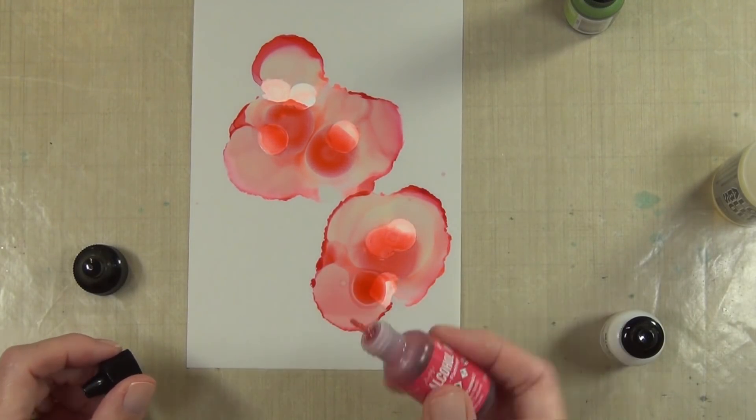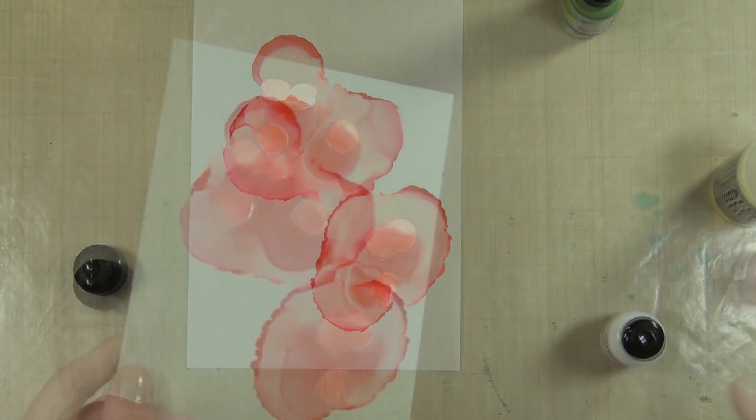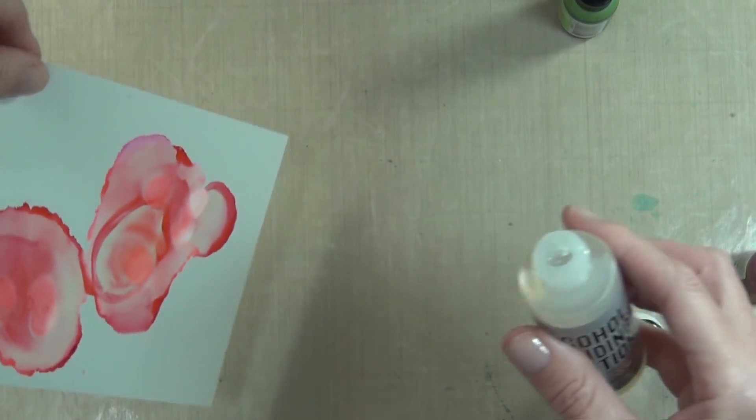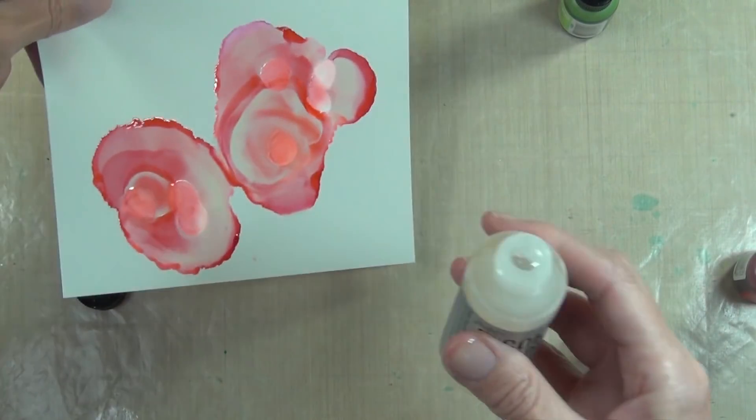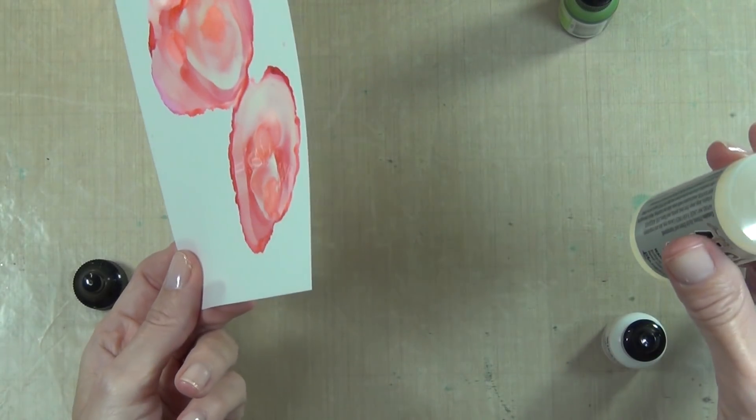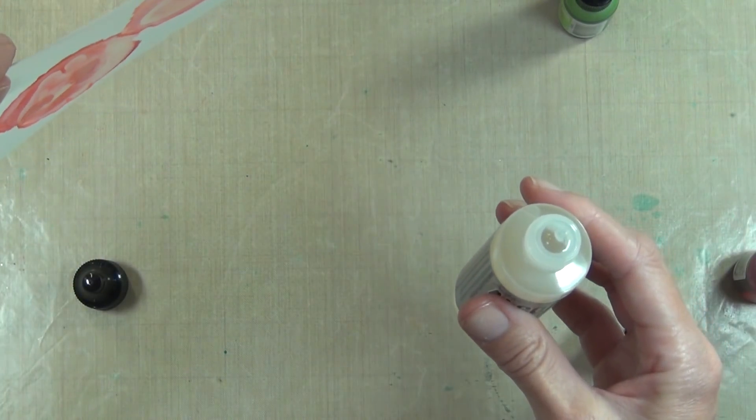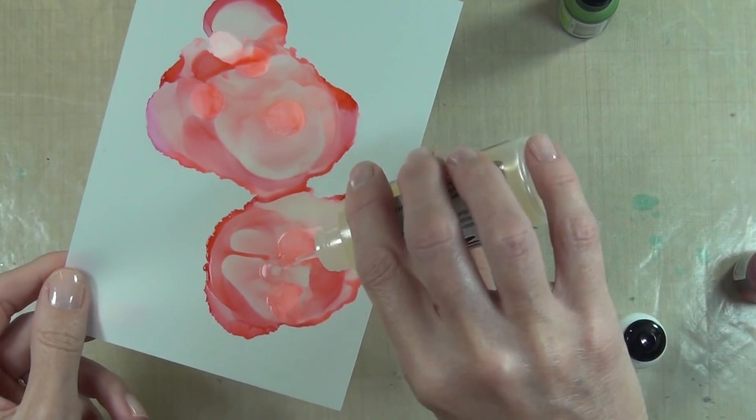The colors aren't really what I would call mixing and I don't know if it's the colors, the order in which I've used them, or the amount of alcohol blending solution. But I'm just going with it now. I'm adding more pink, more blending solution, more white, and just mixing them by tipping my cardstock.